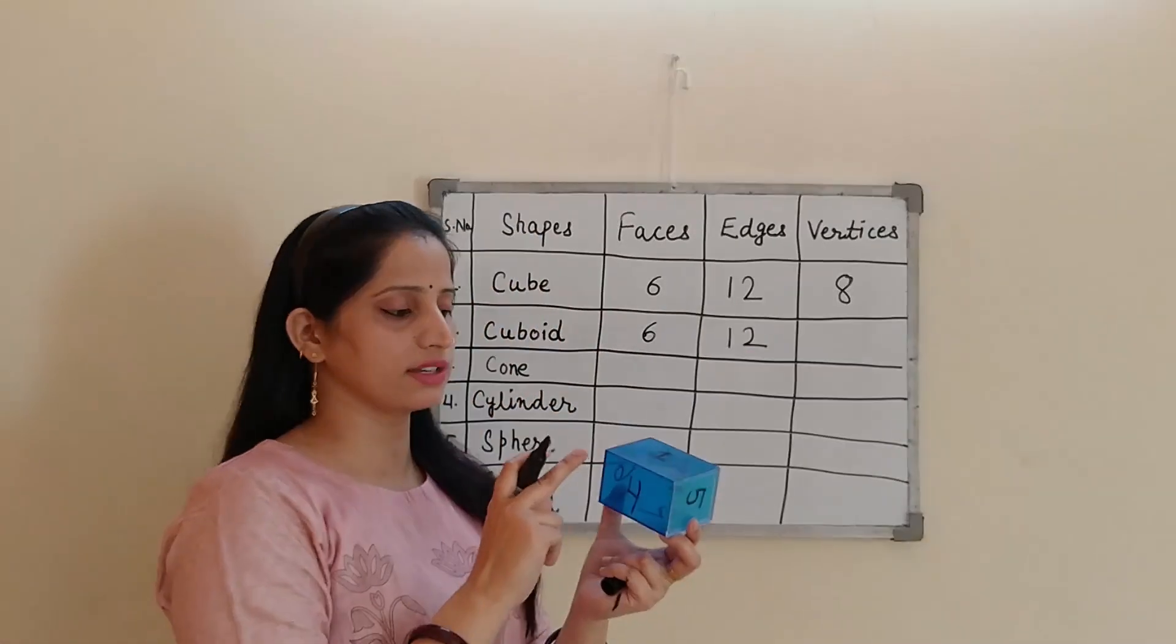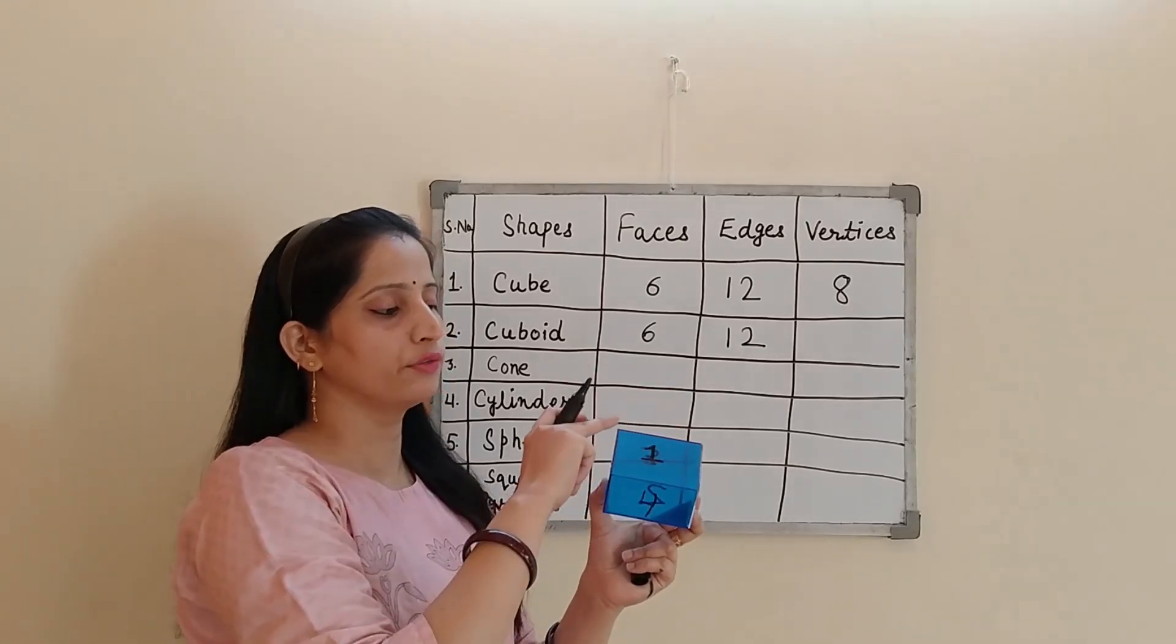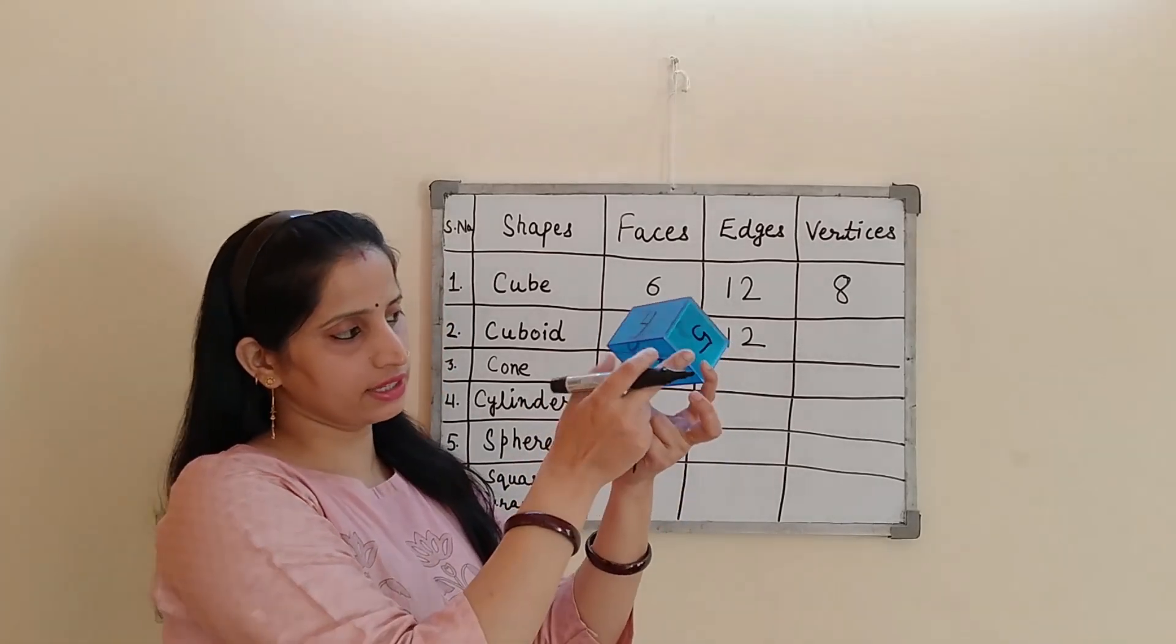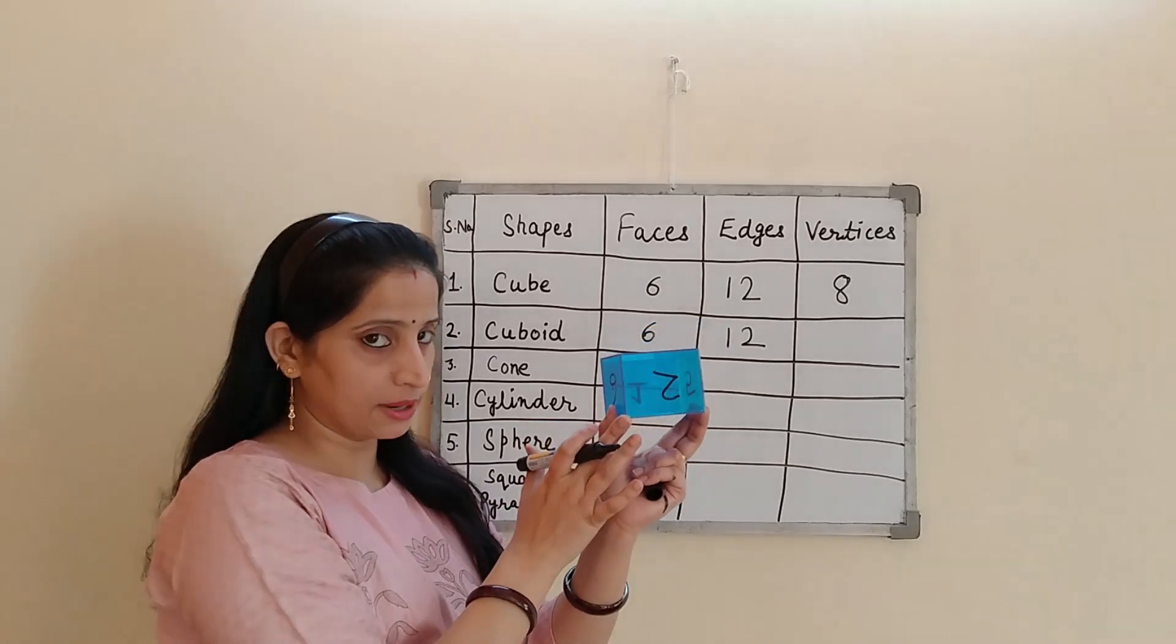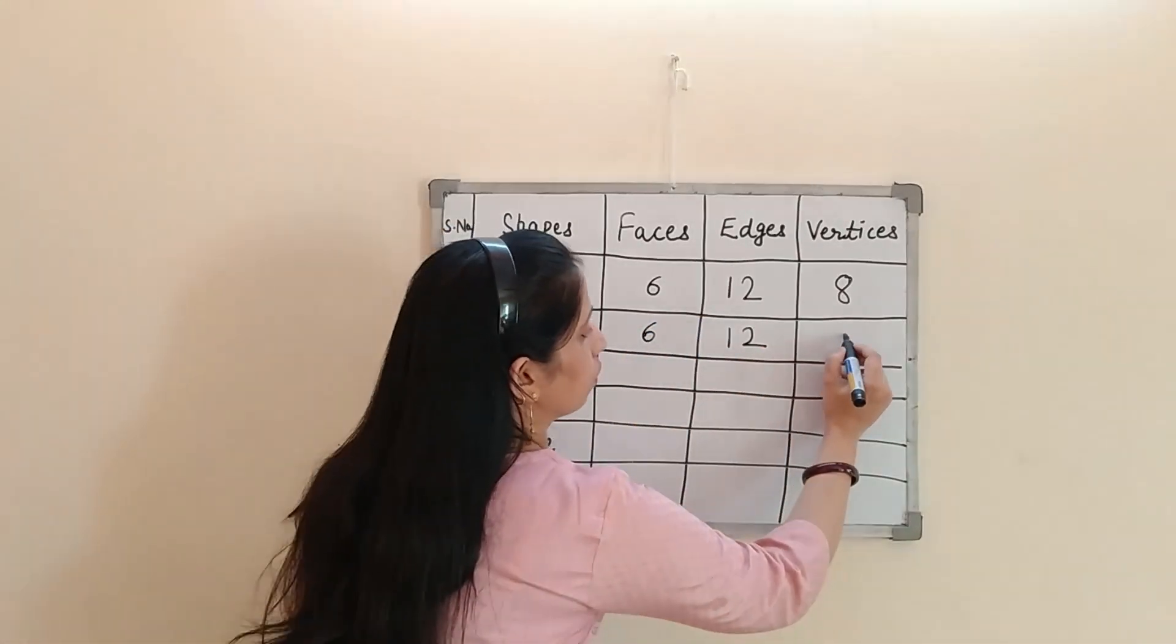And number of vertices. Again, the same as cube. 1, 2, 3, 4, 5, 6, 7, and 8. Again, I am telling vertices means the corners. It has 8 corners.